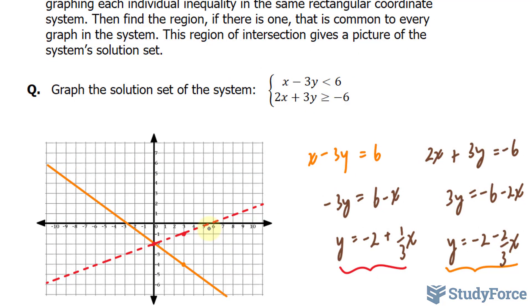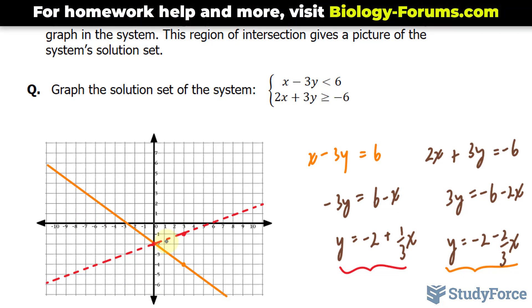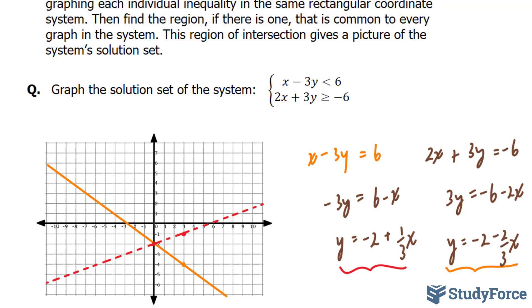Next, we have to determine which region, this one, this one, this one, or this one, tells us where the system's solution set exists. And we can do that by picking a point within each region to test to see if it fits the inequality. For example, if I choose the point 0 and 0, and if I substitute 0 and 0 into here, I'll end up with 0 minus 0, and that's definitely less than 6. If I place 0 and 0 into here, I'll end up with 0 is greater or equal to negative 6, and that's also true. Therefore, just by this test, I know that my solution set will lie in this region. And no other point will work other than those that are found in this highlighted region.